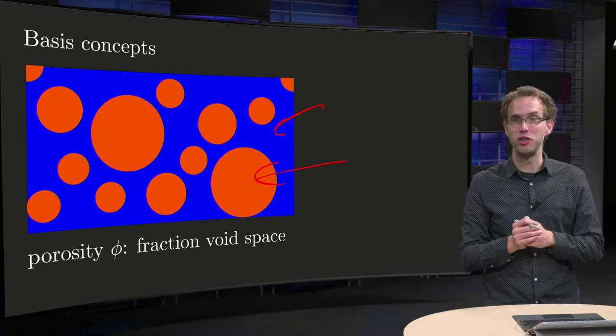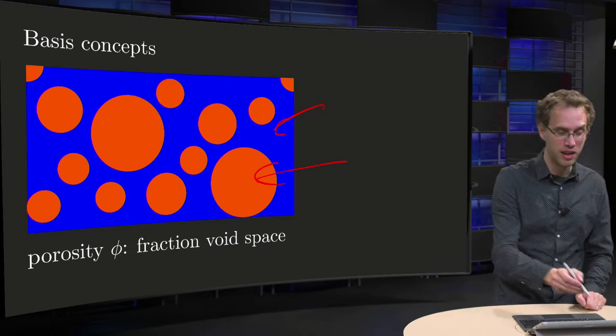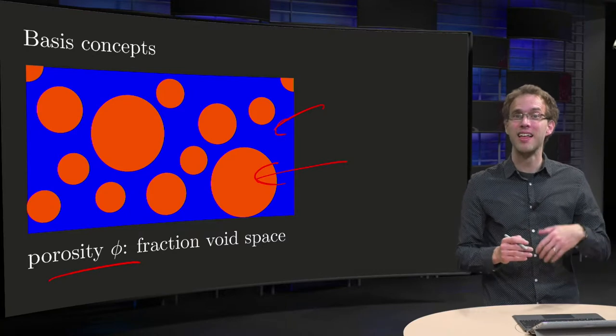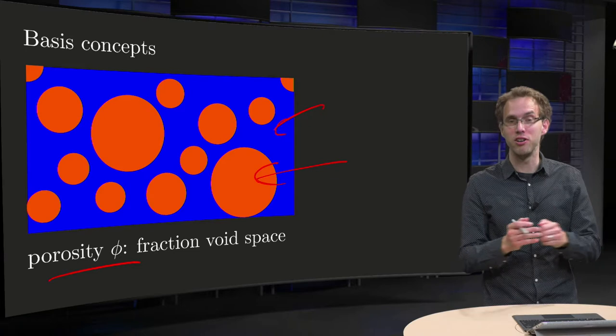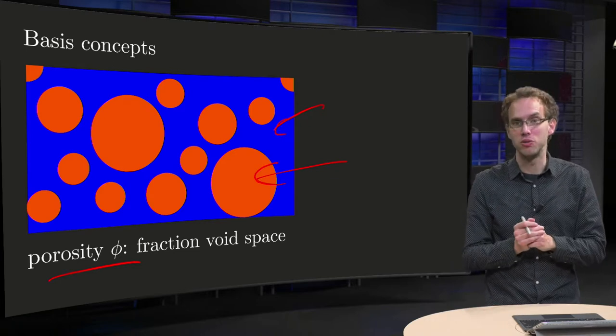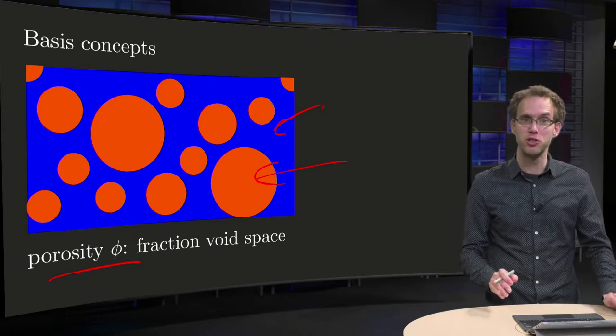Now this fraction of void space, so the fraction of total space which is empty, is called the porosity, often denoted by phi. So this fraction of void space in your rock or in the clay or sand, well that varies of course a lot, but it's usually about 20% or so. And so your porosity is usually about 0.2.